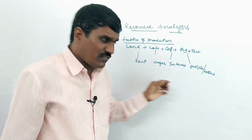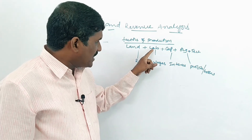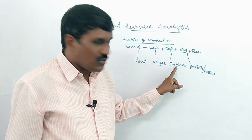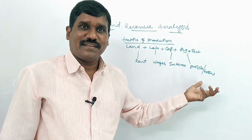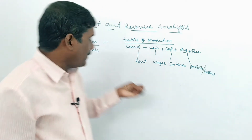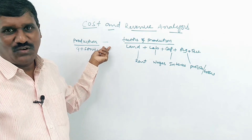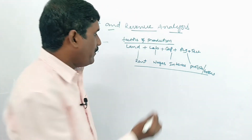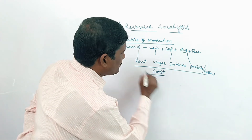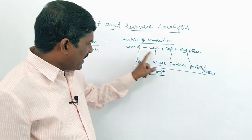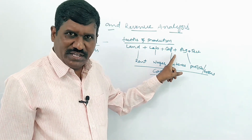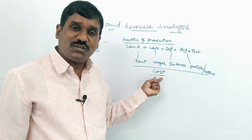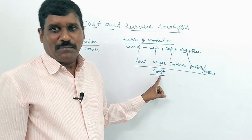Factor pricing — what is factor pricing? When we use land, we have to pay rent. When we use labor, we have to pay wages and salaries. When we use capital, we should pay interest. For organization, profits should be paid in the process of production. So when we want to use the factors of production, we have to incur a cost.